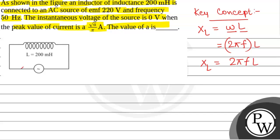Now, suppose current I is flowing in this circuit. The instantaneous voltage of the source is given as 0, so we have V minus IXL equals 0. From here we get V equals IXL, or I equals V by XL, where I is the current flowing in this circuit, V is the voltage of the source that is given as 220 volts, and XL is the inductive reactance.